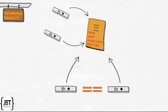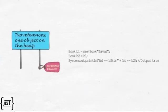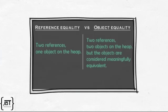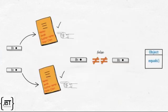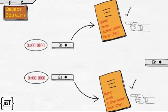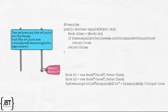We saw that reference equality means two references, one object on the heap, and is determined using the equal-equal operator. We also saw that object equality means two references, two objects on the heap, but the objects are considered meaningfully equivalent. Object equality is determined using the equals method. Since the default behavior of the equals method in the object class compares memory addresses, the equals method should be overridden in every class.